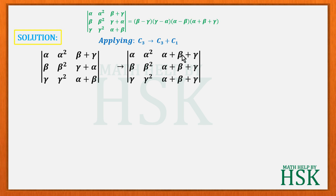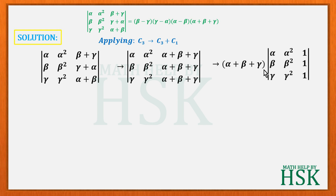Now we can take α+β+γ common from column 3. Taking α+β+γ common, the determinant becomes (α+β+γ) times the determinant with rows (α, α², 1), (β, β², 1), (γ, γ², 1).